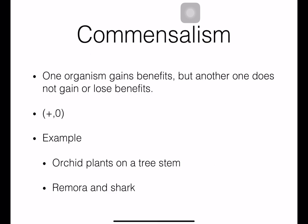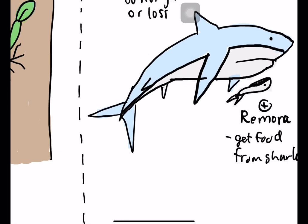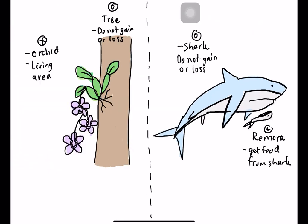The last type is commensalism. In this relationship, one organism gains a benefit but the other does not gain or lose anything — plus and zero. Examples include an orchid plant growing on the stem of a tree, and the remora fish living together with a shark.